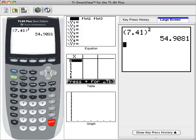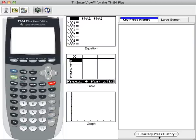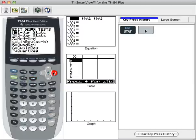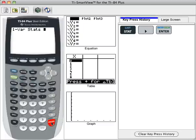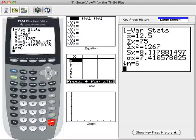But just to recap, to find our one variable stats, once we've entered the data, we press stat. We scroll over one to calc. We press enter to select one variable stats. And then from here, you would just tell your calculator where the data are stored. If they're in L1, you can just press enter, and there's your one variable stats.